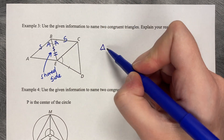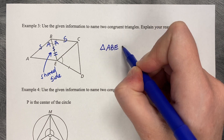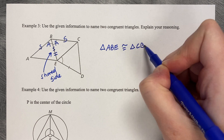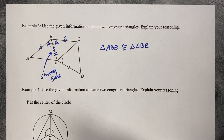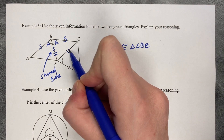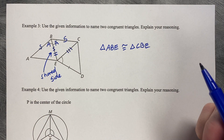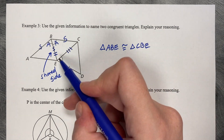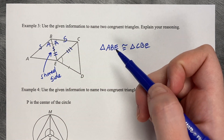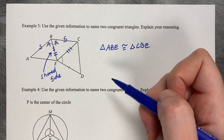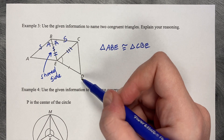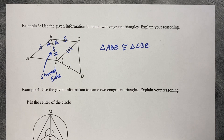Triangle ABE is congruent to triangle CBE. Comparing to the third triangle: this has a new shared side with three tick marks, and EC is not the same length as BE. So triangle DEC is not congruent to the other two because their third side lengths do not match.